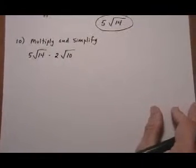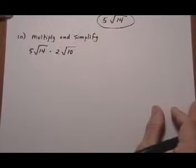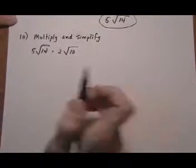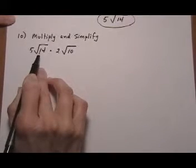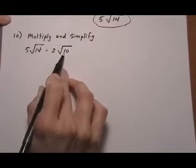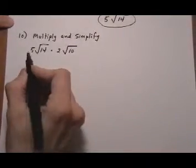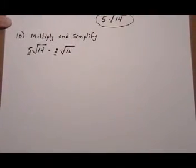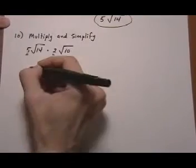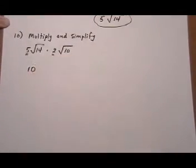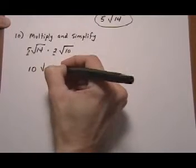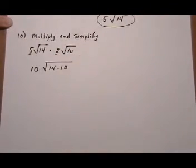And here we have another similar one. Multiply and simplify. 14 is 2 times 7 so nothing nice there. 10 is 2 times 5. Nothing nice there so I'm going to go ahead and put them under one radical. And I will go ahead and do 5 times 2 and just bring that to the outside. So 5 times 2 gives a 10. Root 14 times 10 under one radical.